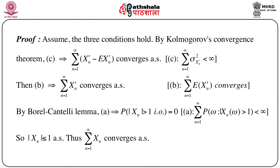For the proof, first assume that the three conditions hold. By Kolmogorov's convergence theorem, condition C — that the summation of the variance of x_n prime is less than infinity — implies that the summation of x_n prime minus the expectation of x_n prime converges almost surely. Condition B states that the summation of the expectation of x_n prime converges, which immediately implies that the summation of x_n prime converges almost surely.